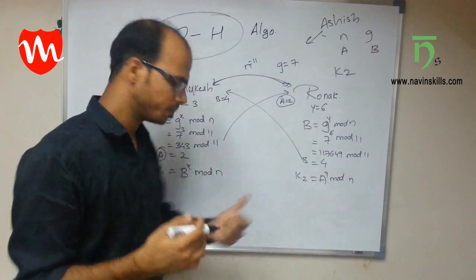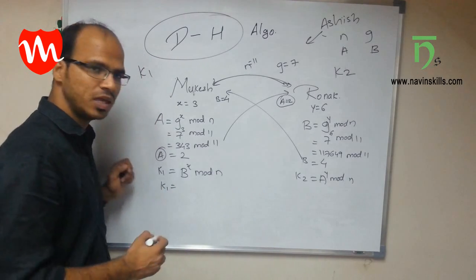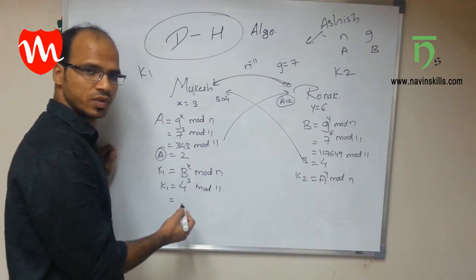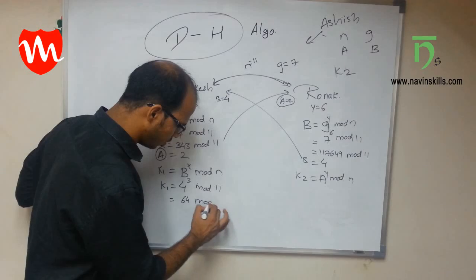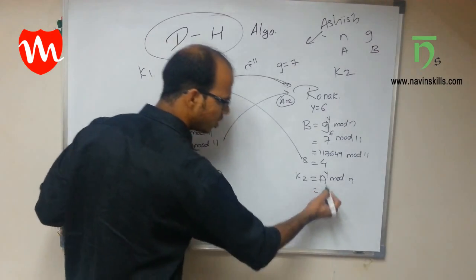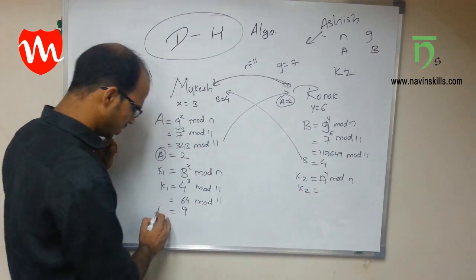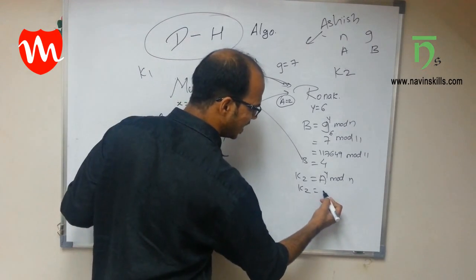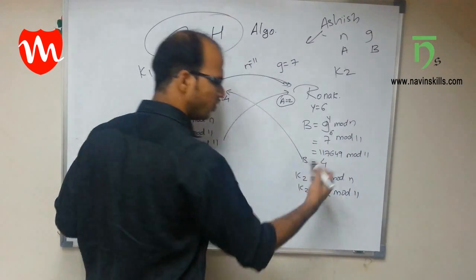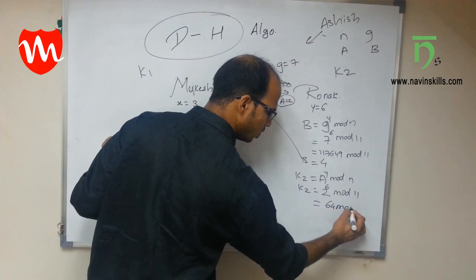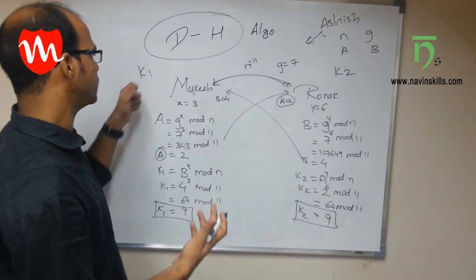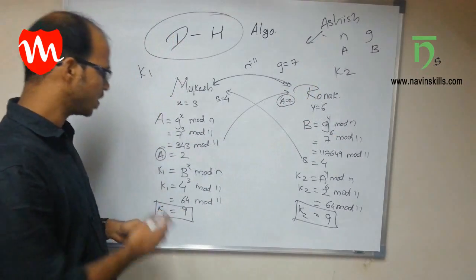Mukesh computes K1: b = 4, x = 3, so 4^3 = 64, and 64 mod 11 = 9. So K1 = 9. Ronak computes K2: a = 2, y = 6, so 2^6 = 64, and 64 mod 11 = 9. So K2 = 9. Both K1 and K2 equal 9 — they have arrived at the same shared key!